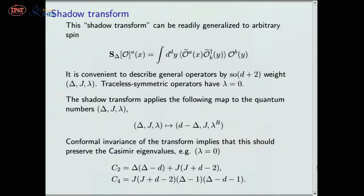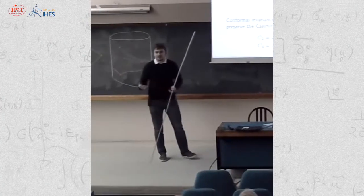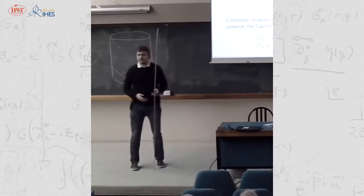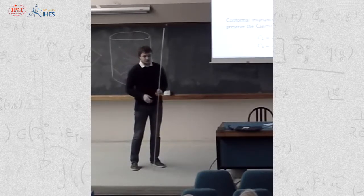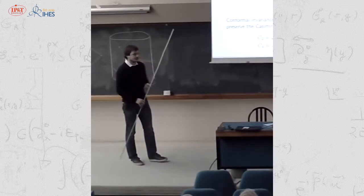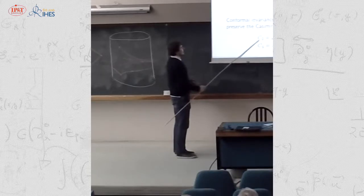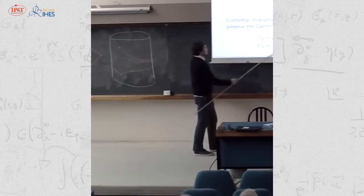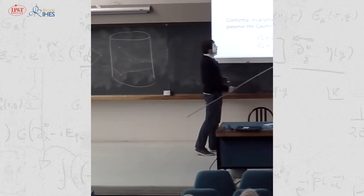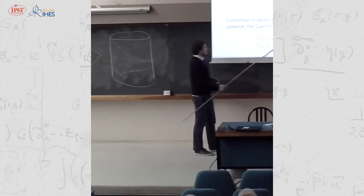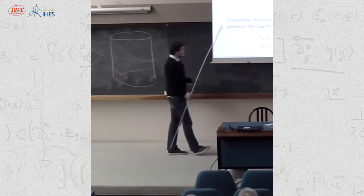Since the shadow transform is conformally invariant, it commutes with all conformal generators and in particular with the conformal Casimirs, which means it should preserve the eigenvalues of these Casimirs. The eigenvalues of the quadratic Casimir for the case λ equals zero are given by expressions in terms of Δ and j, and we can indeed check that this map preserves these eigenvalues.